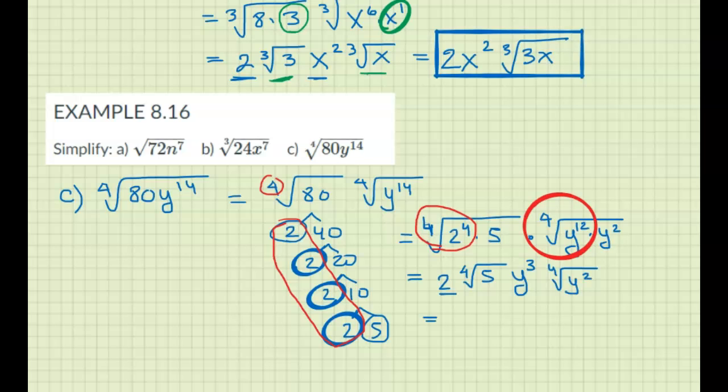Alright, let's bring these together. So I have 2y cubed, and bring these together. Fourth root of 5y squared. There you go. That's our simplified answer.